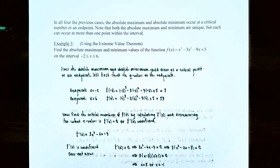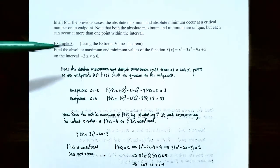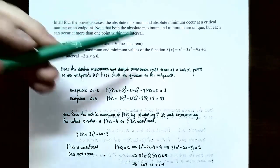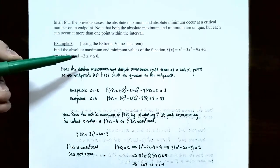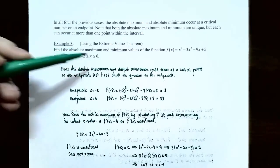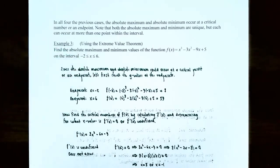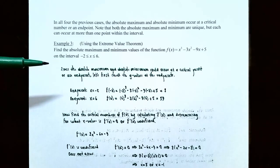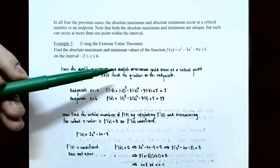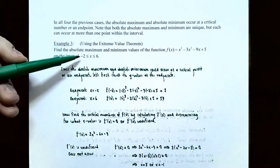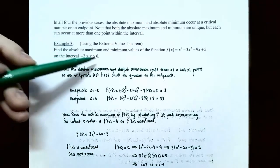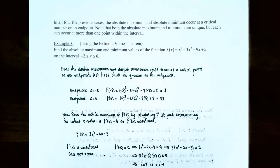Now let's use the Extreme Value Theorem in Example 3. Find the absolute maximum and absolute minimum values of f(x) = x³ − 3x² − 9x + 5 on the closed interval negative 2 ≤ x ≤ 6. Since the absolute maximum or minimum could occur at a critical point or at the endpoints, we first check the y values at the endpoints x equals negative 2 and x equals 6.